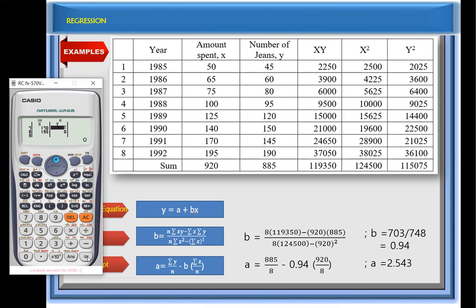Next is we will now proceed to y. So we have the value for y. 45 corresponds to 50, and we have 60, we have 80, 95, 120, 150, 145, and the last one is 190.